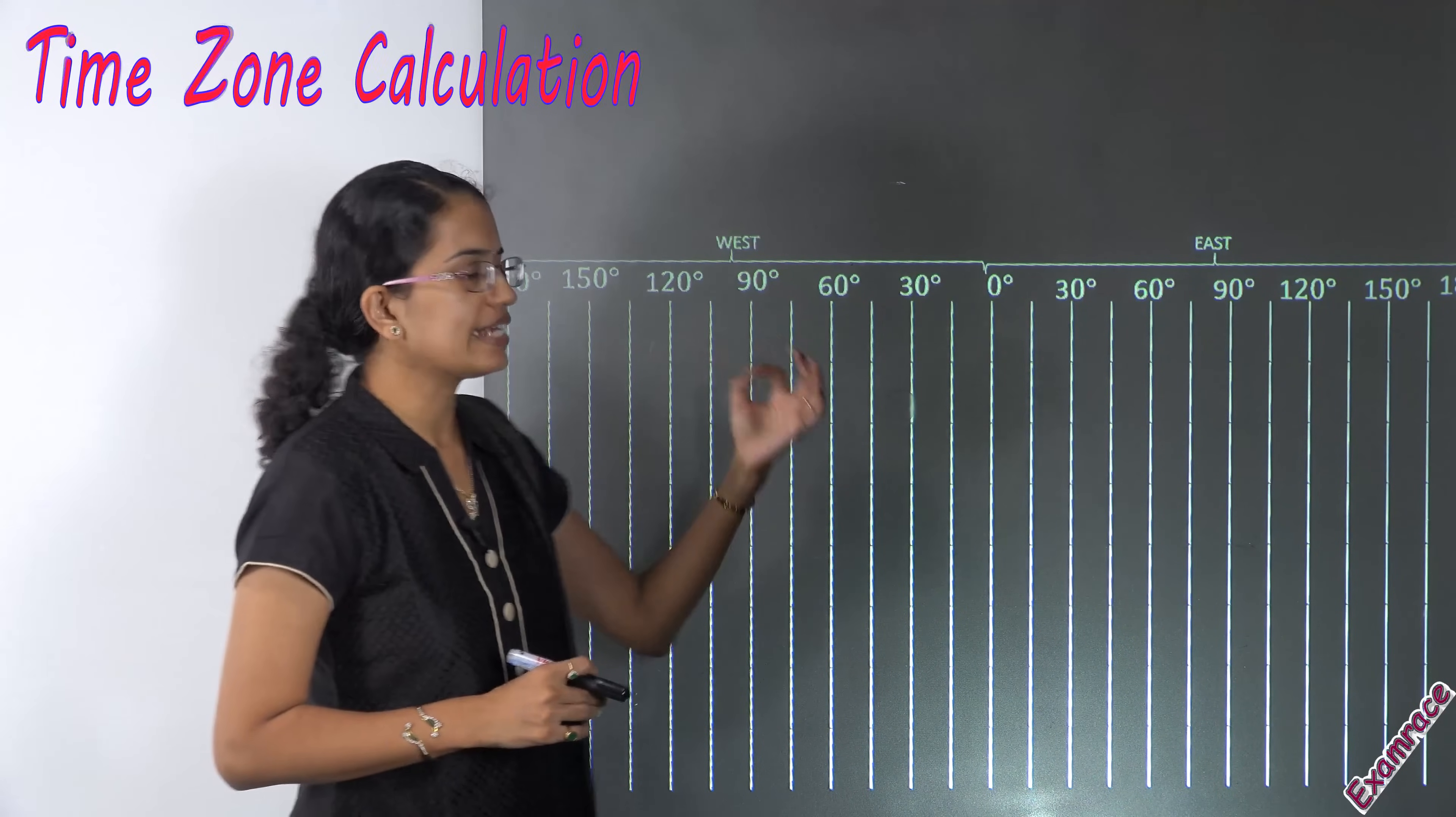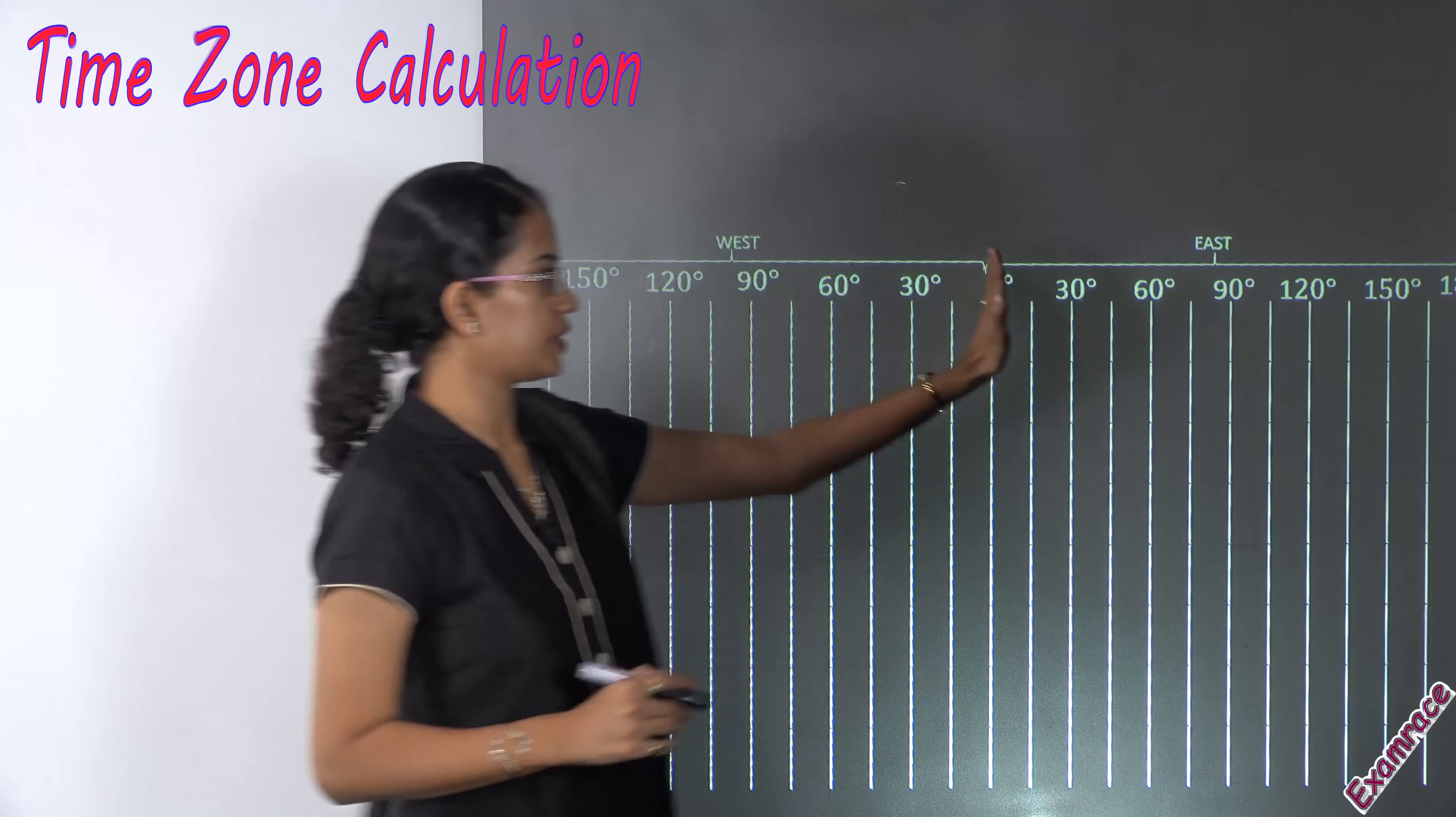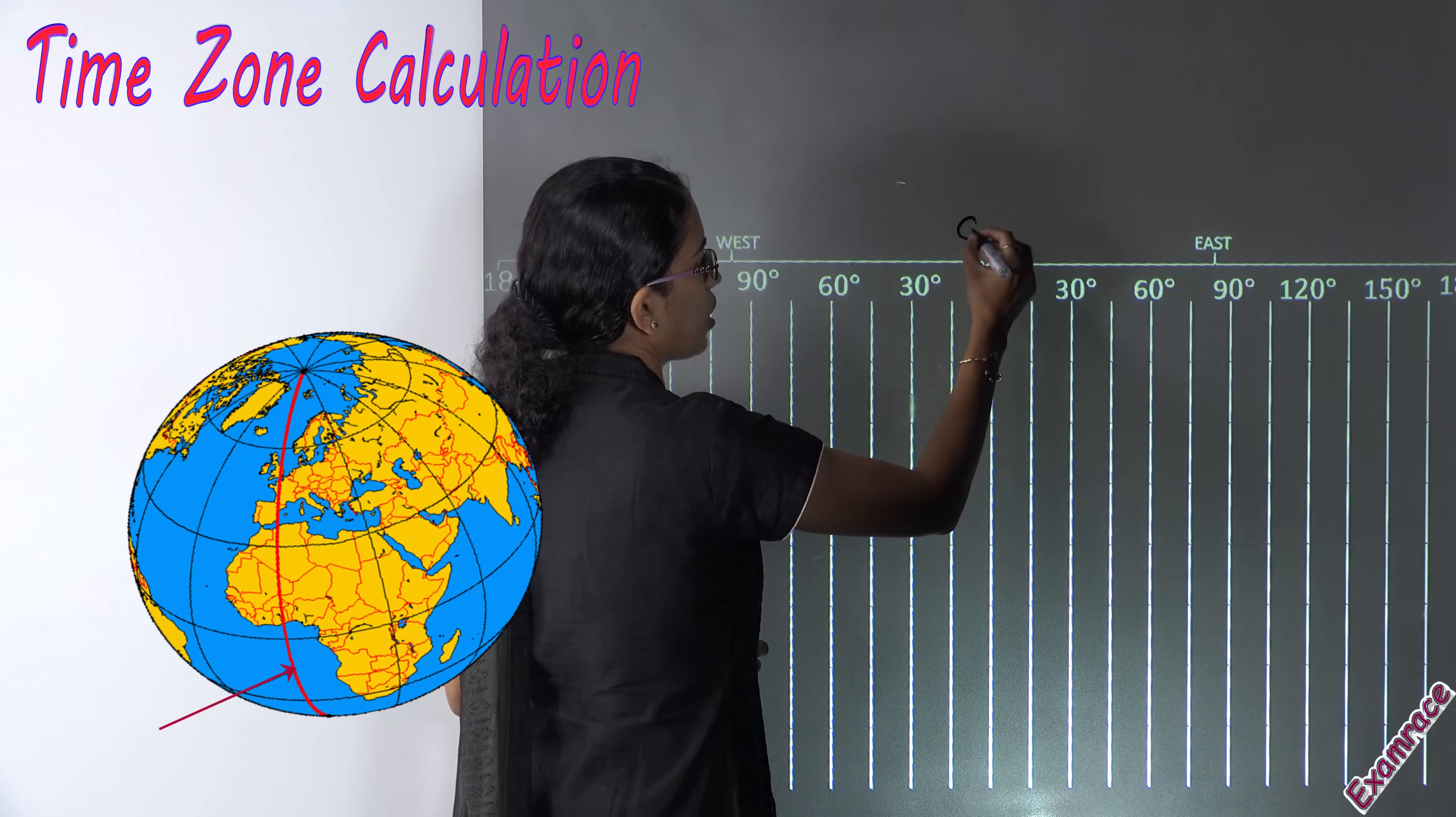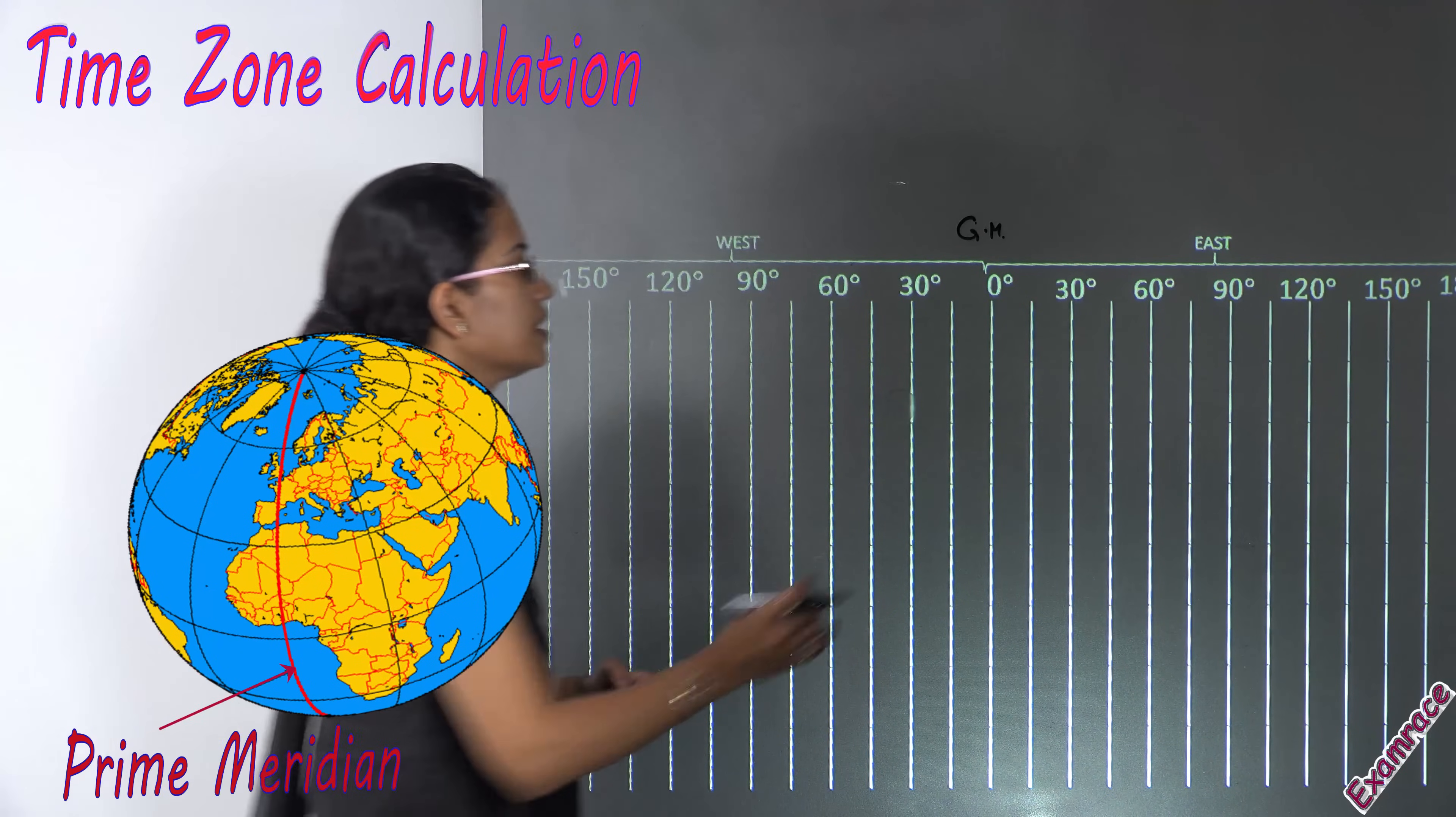The simplest way I would recommend is understanding this diagram. What we have is zero degree. This zero degree is known as the prime meridian or the Greenwich meridian. This runs through London and you have the zero degree.